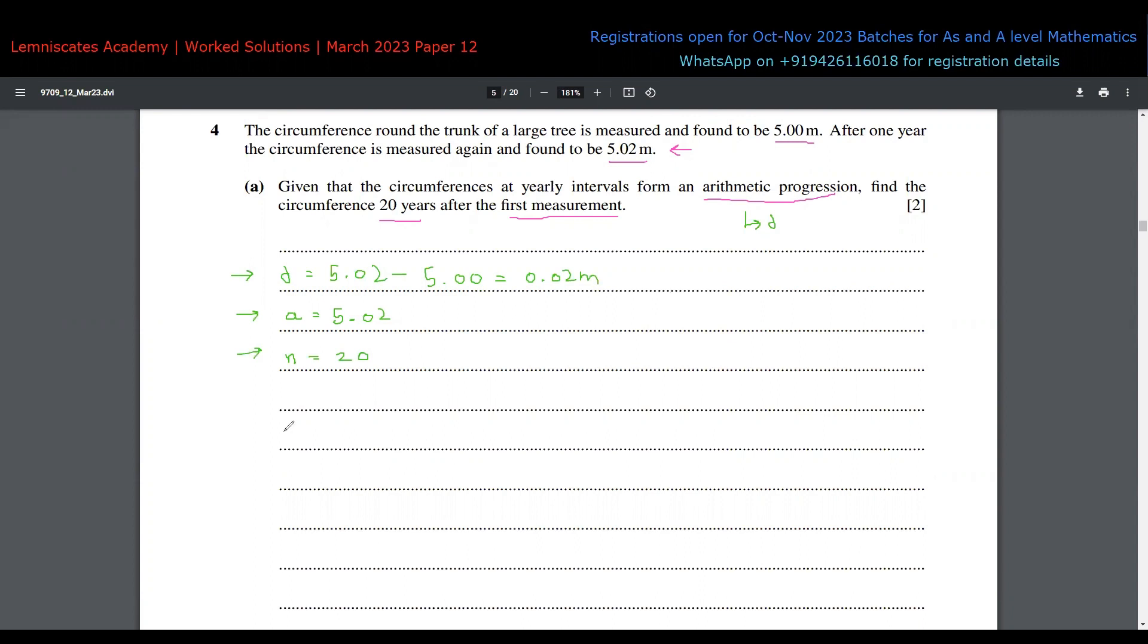According to the nth term formula, the nth term of an arithmetic progression is given by Tn equals a plus (n minus 1) times the common difference. So a is 5.02, this will be 20 minus 1, which is plus 19, and d is 0.02. If you take your calculator and add them together, 5.02 plus 19 into 0.02, the value is 5.40 meters. That's your final answer for part A.